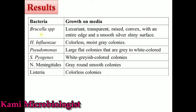Since this media provides growth for both fastidious and non-fastidious organisms, bacteria such as E. coli, Klebsiella, and Pseudomonas can all grow on it. The colonies obtained are similar to those on blood agar medium. We mostly use this media for Brucella — hence it is selective for Brucella — but with the addition of blood, yeast, peptone, and other materials, it also supports H. influenzae, Pseudomonas, Staph aureus, Neisseria meningitidis, and Listeria.